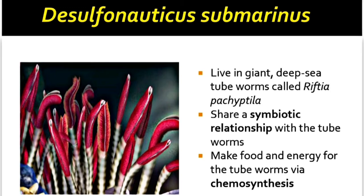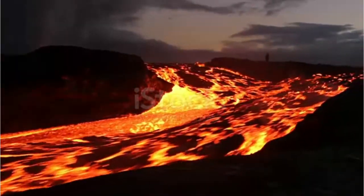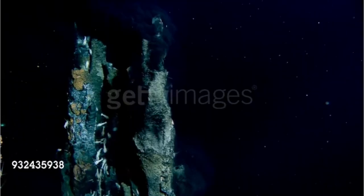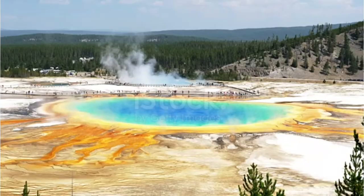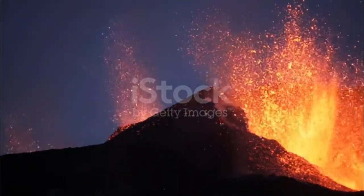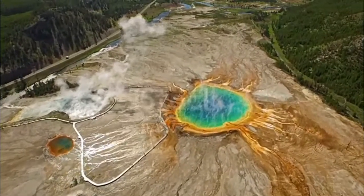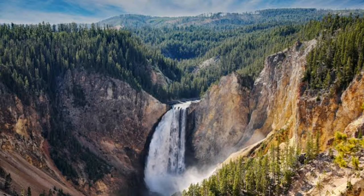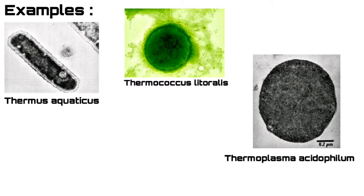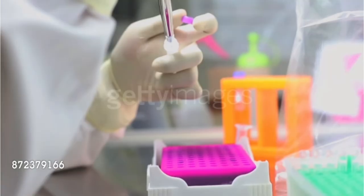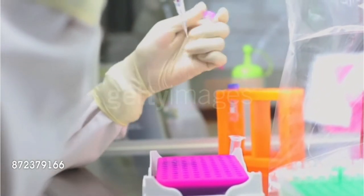Thermophiles are the group of Archaebacteria that live in acidic and high-heat conditions. They are also called thermoacidophiles because they are obligate thermophiles and can also be acidophilic. These extreme thermophiles live in hot springs, volcanic areas, and deep-sea hydrothermal vents. They can survive at temperatures more than 100 degrees Celsius. You can see these thermophiles in the hot springs of Yellowstone National Park in the USA. Examples include Thermococcus littoralis, Thermoplasma, Thermus aquaticus, Thermoproteus tenax, Thermococci, and Sulfolobus.